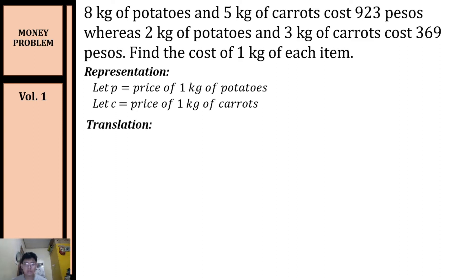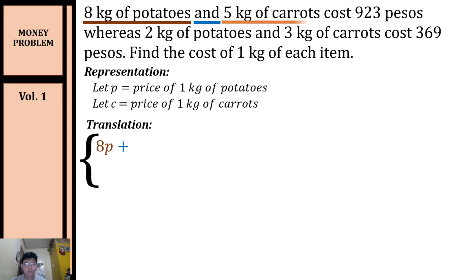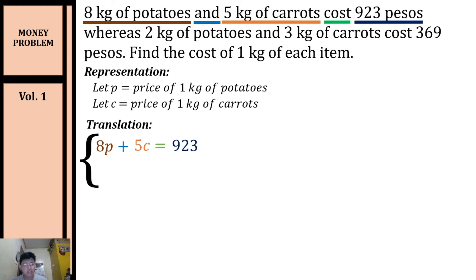Let's translate our word problem to a system of linear equations. We have eight kilograms of potatoes, so we have 8 times the price of one kilogram of potatoes. 'And' can be translated as an addition symbol. Then five kilograms of carrots gives us 5c. 'Cost' translates to an equal symbol, equal to 923 pesos. So our first equation is: 8p + 5c = 923.